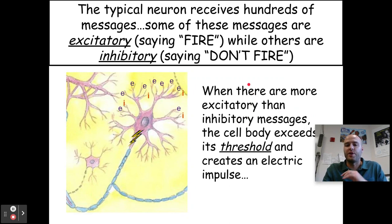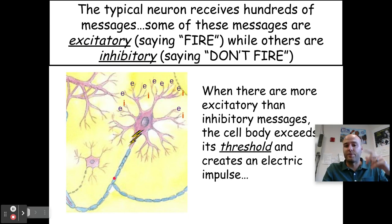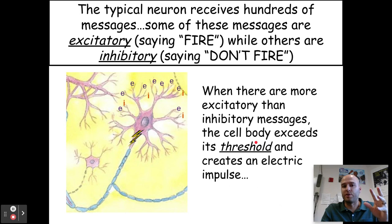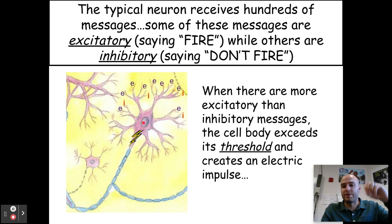The typical neuron receives hundreds, if not thousands, of messages a day. Most are excitatory, telling the neuron to fire and send a message down the axon and out through the synapse. Some are inhibitory, saying don't fire. But when there are more excitatory than inhibitory messages coming in, the cell body will exceed its threshold and create an electric pulse. There are more excitatory messages coming in at the dendrites, sending information to the cell body, and the nucleus says it's reached its threshold and needs to continue sending the message — and it fires.